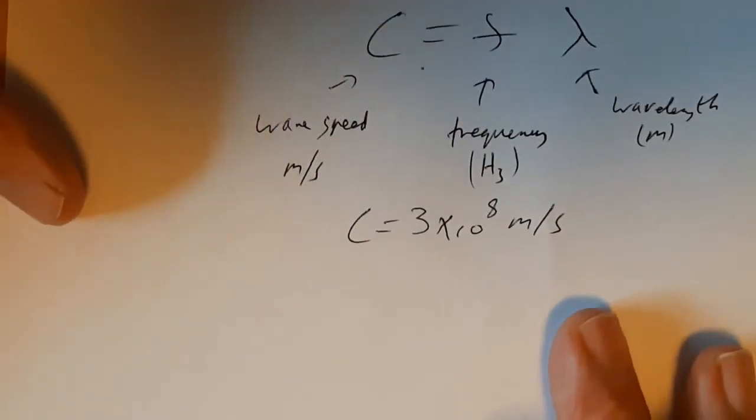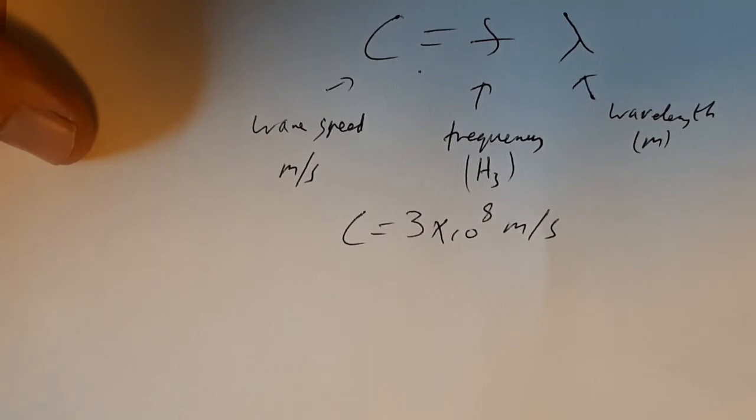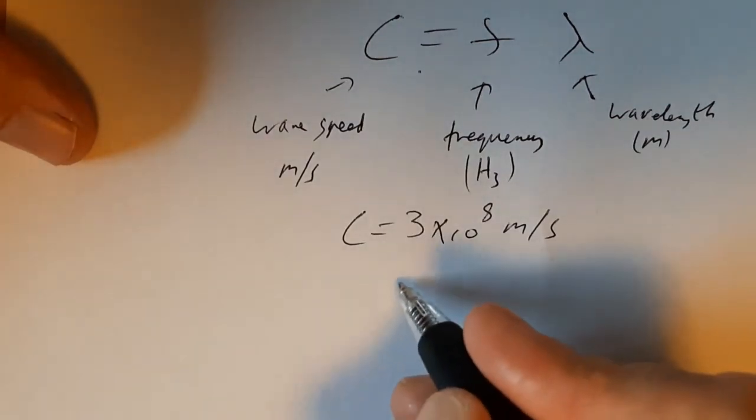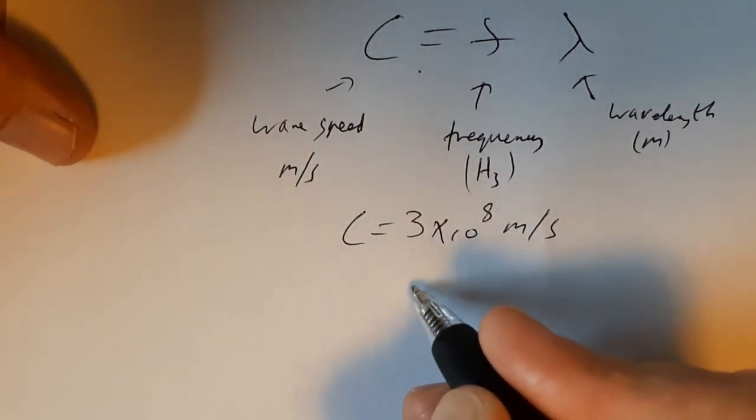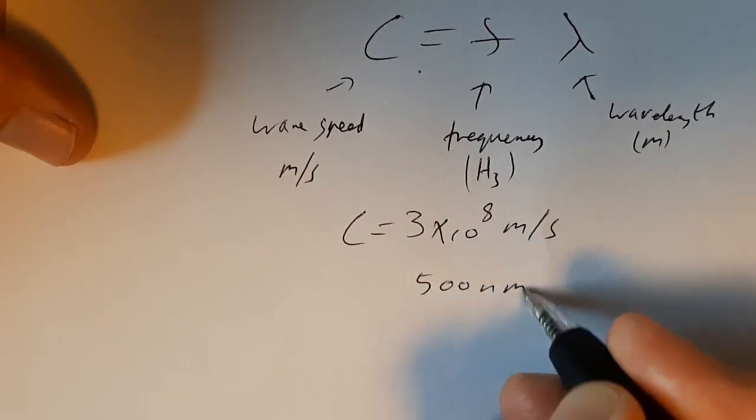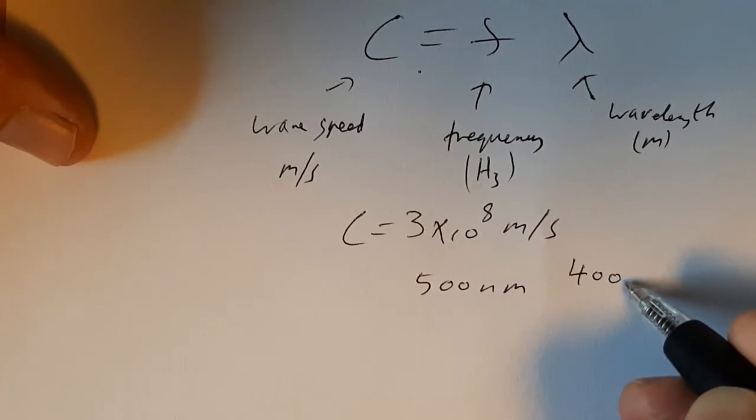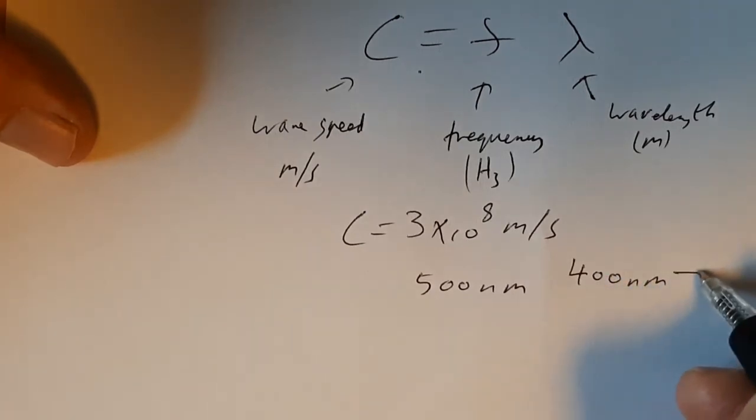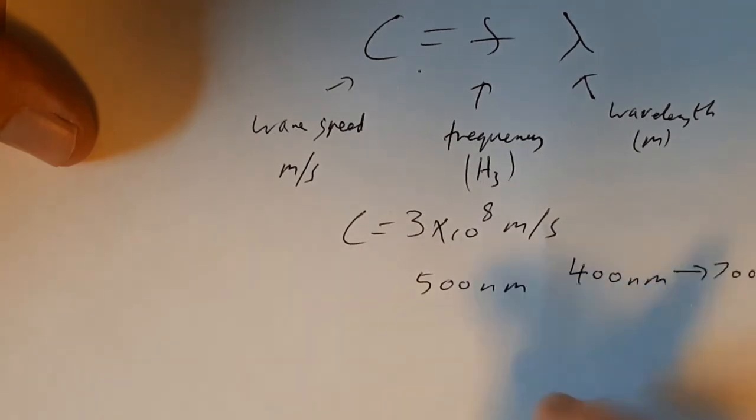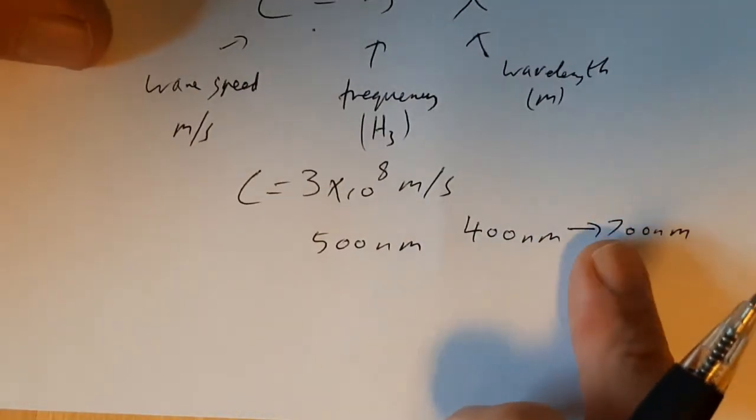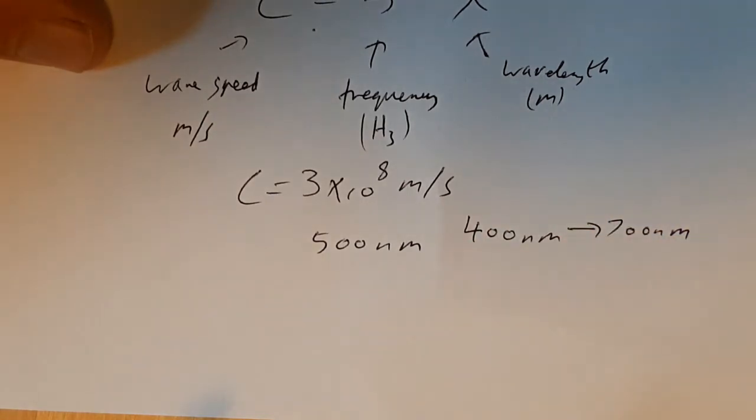Let's go back to the maths at the bottom there just for a moment. So a typical calculation we might need to do is we might be told that the wavelength of light is, say, 500 nanometers. It's really worth knowing that the visible part of light goes from blue light at 400 nanometers to red light at about 700 nanometers.